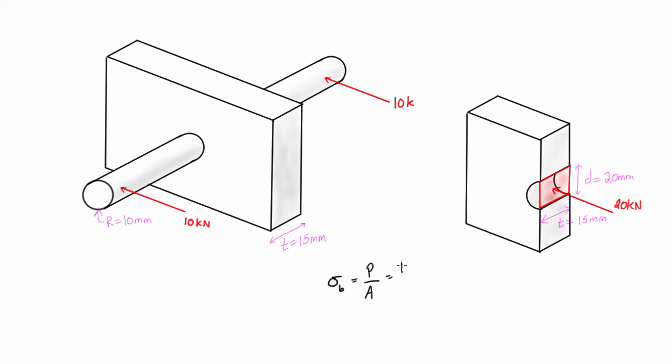And so in this case we actually have P, and its dimensions are t times d, right? t is the width of the block and d is the diameter of the rod.